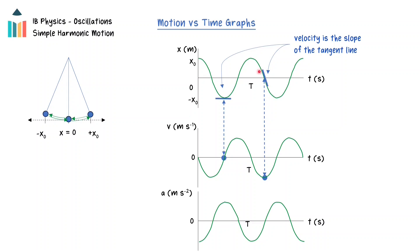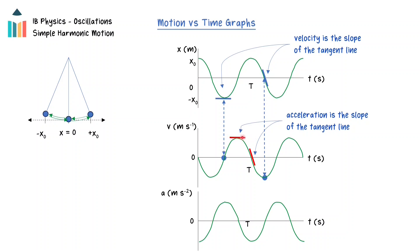The direction of the velocity can be found by the sign of the slope. In this example, the slope is negative, so the velocity will be in the negative direction. The acceleration time graph can be found in a similar manner. The instantaneous acceleration is the slope of the tangent line of the velocity time graph. When the object is at a maximum velocity, the acceleration will be zero meters per second squared. When the velocity is zero meters per second, the acceleration will be a maximum. Again, the direction of the acceleration can be found by the sign of the slope. In this example, the slope is negative, and so the acceleration will be in the negative direction.